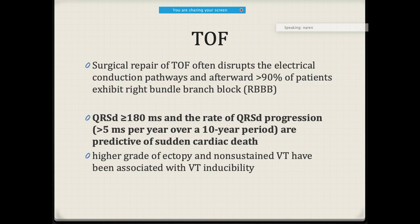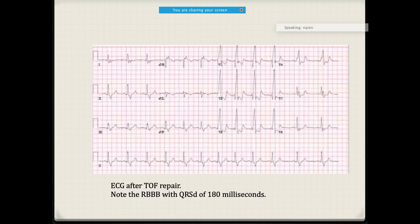After TOF repair, if the QRS duration is prolonged and progresses more than 5 milliseconds per year over a 10-year period, it is a predictive marker of sudden cardiac death. Higher-grade ectopy and non-sustained VT are associated with VT inducibility. Post-TOF repair VT is mostly due to macro re-entry around the right ventriculotomy scar.